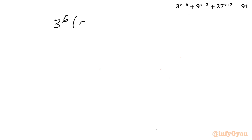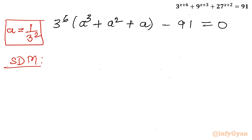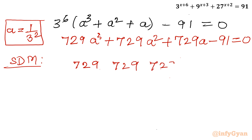Let me write the cubic equation first: 729a^3 + 729a^2 + 729a − 91 = 0. Now I will write all the coefficients for synthetic division: 729, 729, 729, −91, with a horizontal line. The base solution is a = 1/9.